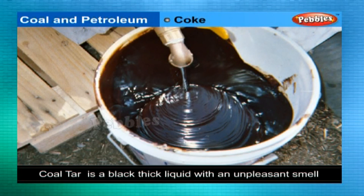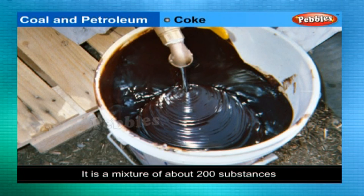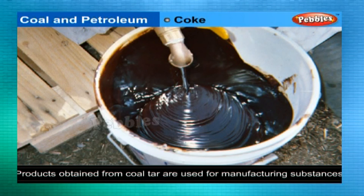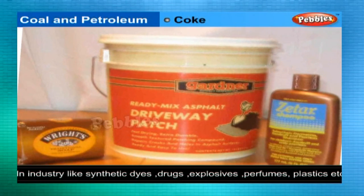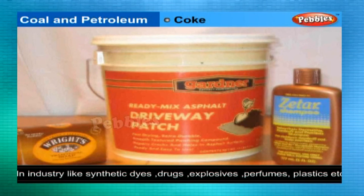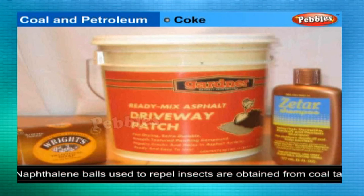Coal Tar: It is a black, thick liquid with an unpleasant smell. It is a mixture of about 200 substances. Products obtained from coal tar are used as starting materials for manufacturing various substances used in everyday life and in industry, like synthetic dyes, drugs, explosives, perfumes, plastics, paints, photographic materials, roofing materials, etc. Interestingly, naphthalene balls used to repel moths and other insects are also obtained from coal tar.